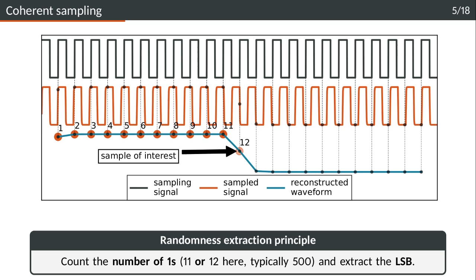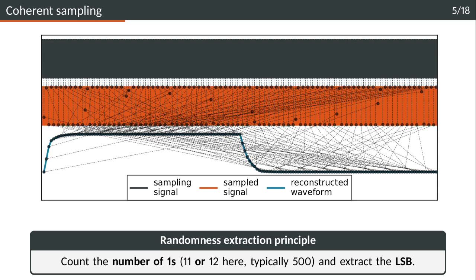When we have 500 ones typically the waveforms look like this. We see that we have multiple samples on the edges so we will be able to extract the randomness from the clock jitter.